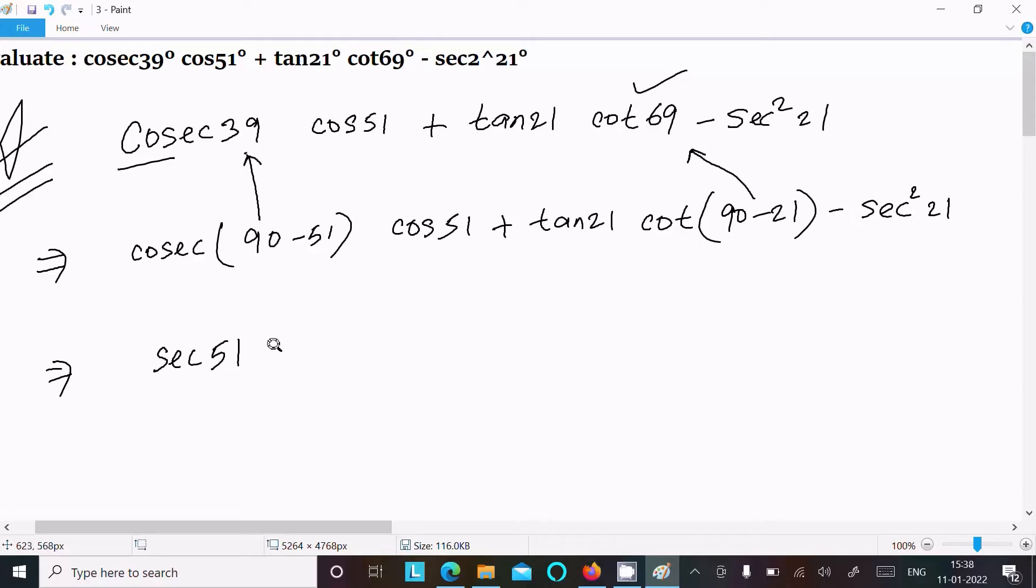And the next is here cos 51°. This we can write: tan 21°, cot(90° - θ) equals tan θ. So we can write tan 21° here, and sec² 21°.